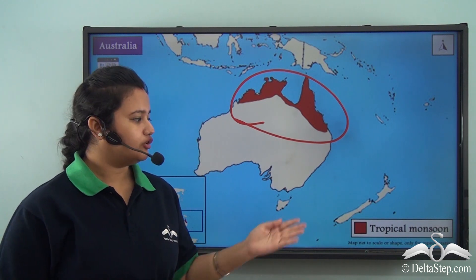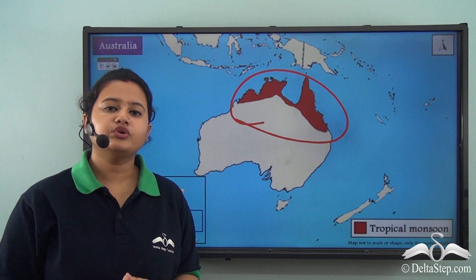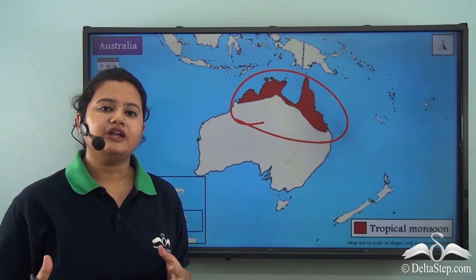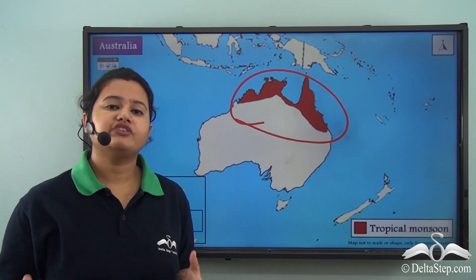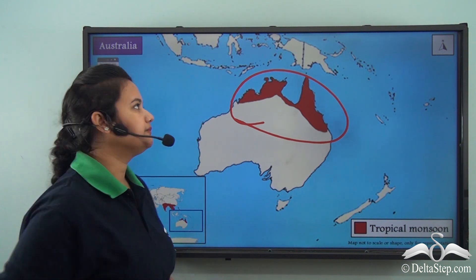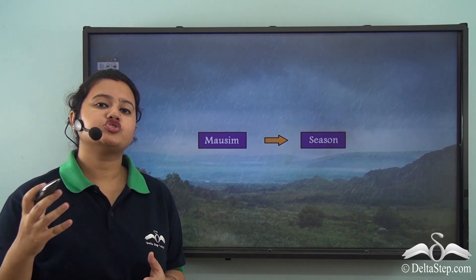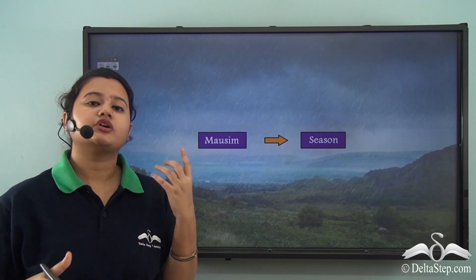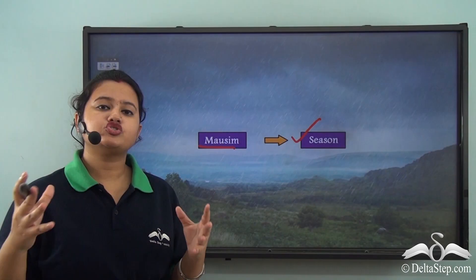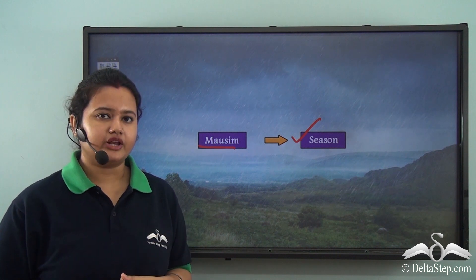To summarize the location: the tropical monsoon region is located on both sides of the equator, between 10 to 30 degrees north and south latitudes, and is spread across several continents. The word 'monsoon' originates from an Arabic word meaning 'season.' Tropical monsoon regions experience a seasonal reversal of winds that causes rainfall.